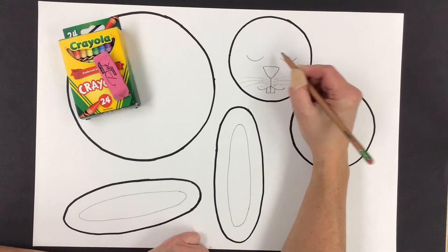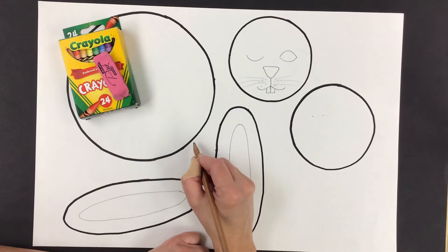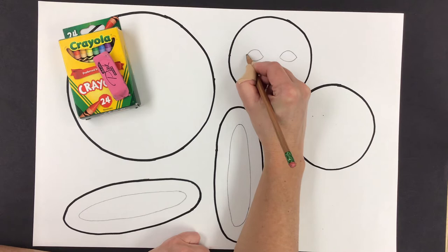If we want to draw a rabbit with open eyes, even though it might be napping, we make an arch or rainbow line at the top. Oh, I think our rabbit's winking. Now we draw the same on the other side.